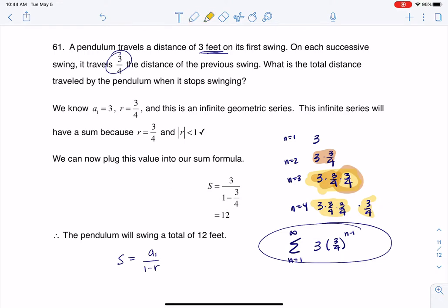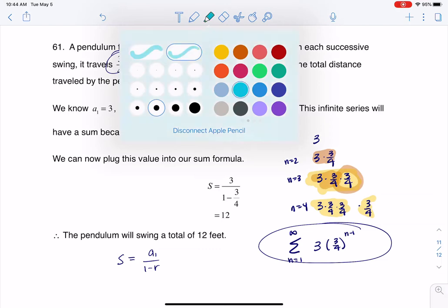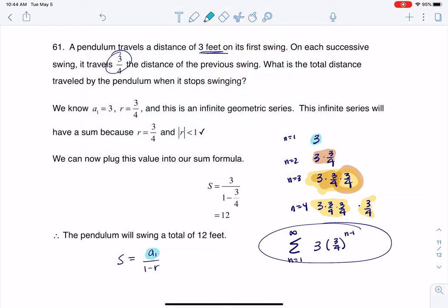We already established that a sub one was three, and then we see the base of our power is three-fourths, so I'm going to plug that in for r. And that's what you see me doing here. And when I plug that in, I get that my pendulum swung 12 feet.